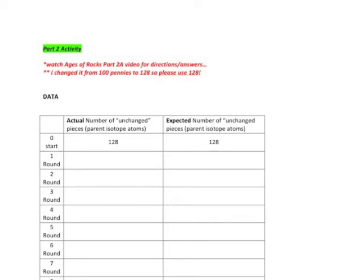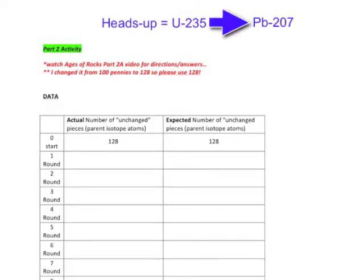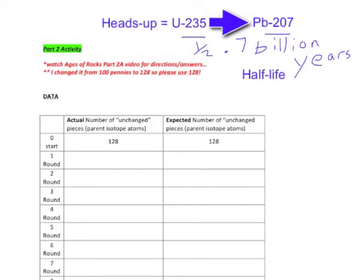In this experiment, a heads-up penny represents Uranium-235. Uranium-235 is radioactive; it occurs in igneous rocks that form from magma or lava, and it's going to decay to Lead-207. The amount of time it takes for half of a population of Uranium-235 to decay to Lead-207 is 0.7 billion years. That's known as the half-life.